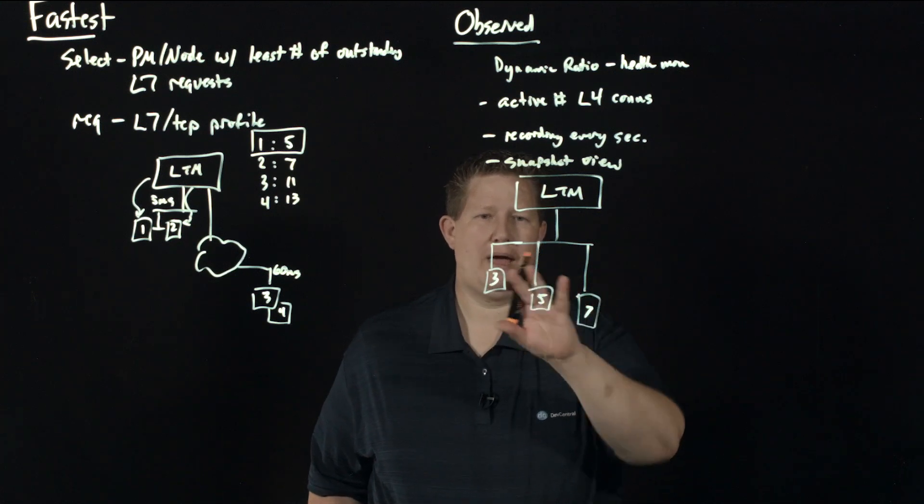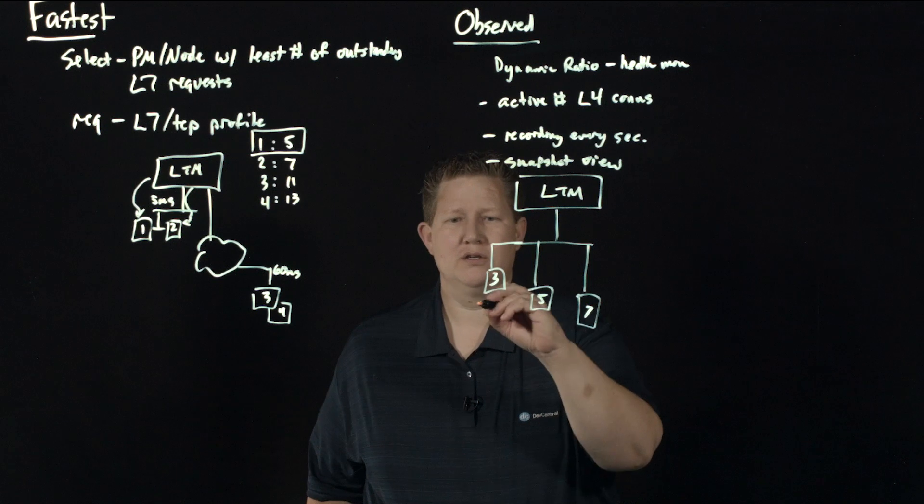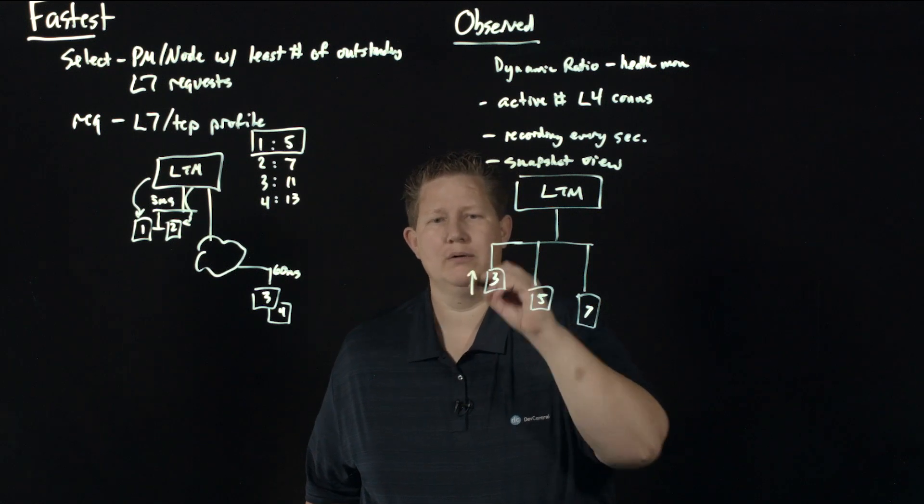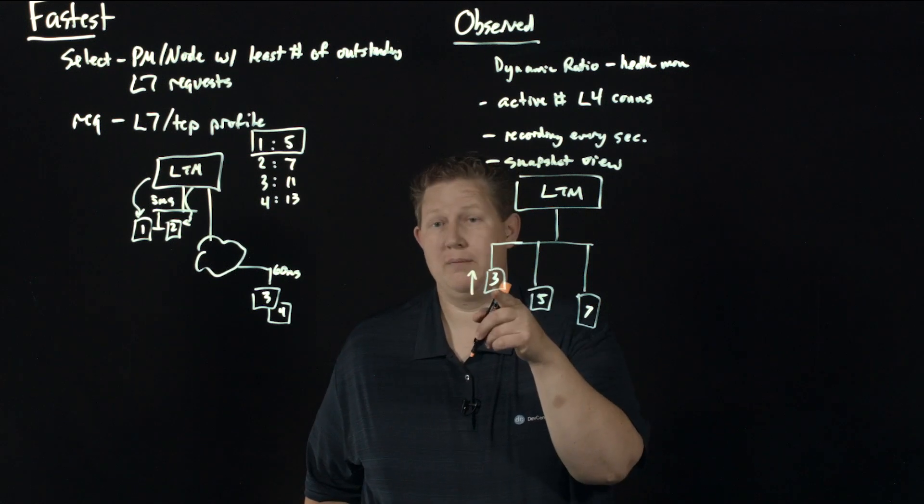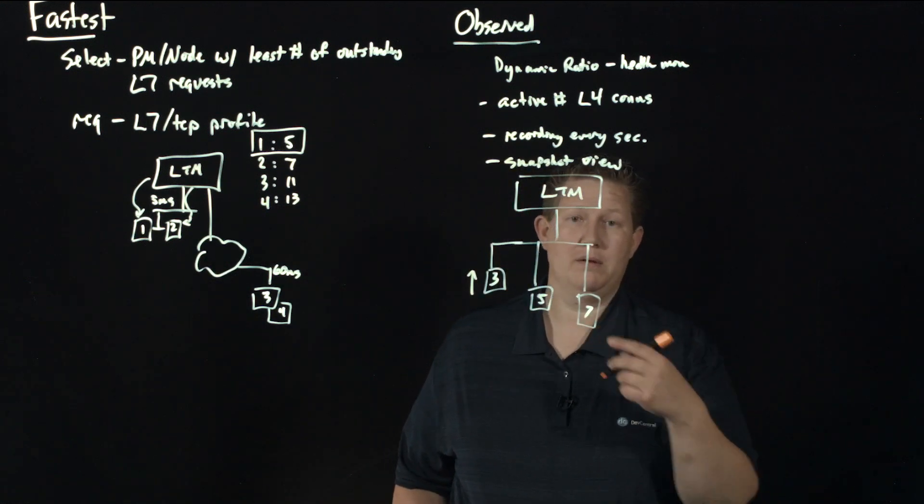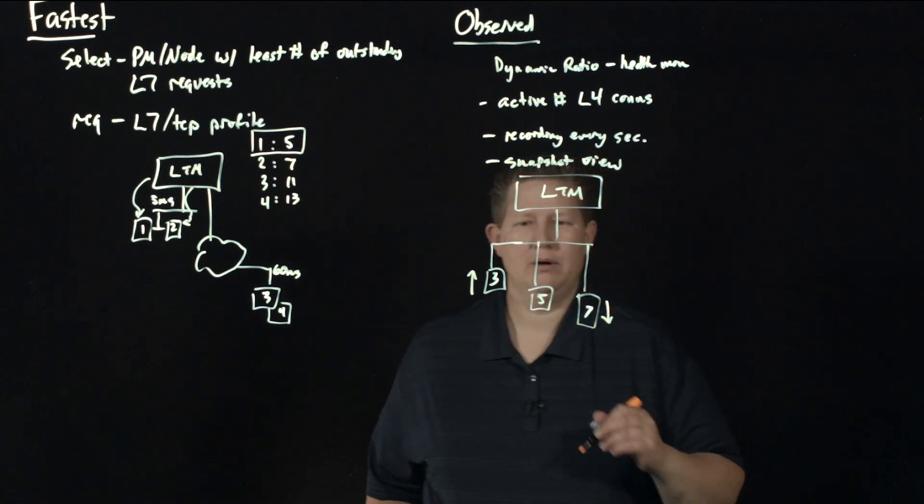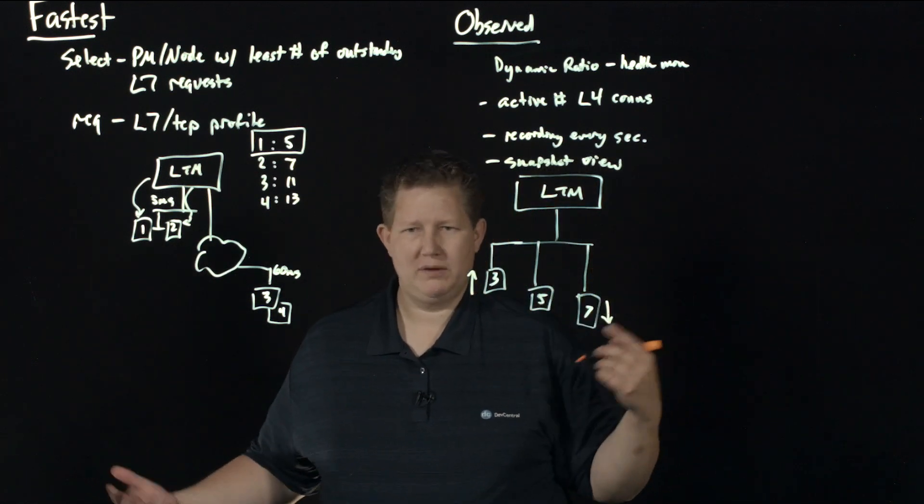It's going to look at my three pool members and my least is here, so it's going to increase the ratio. It's going to make a bigger ratio here, and then on my pool member with the most number of connections it's going to be a smaller ratio, and then the one in the middle is somewhere in the middle.